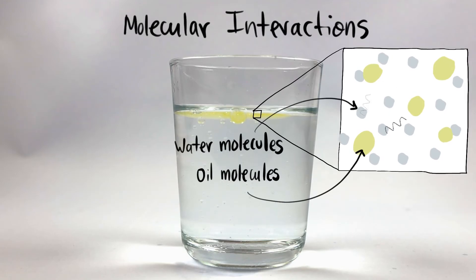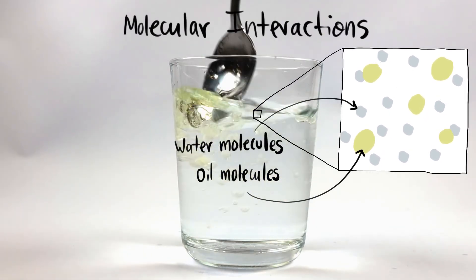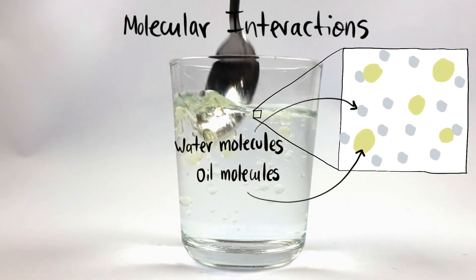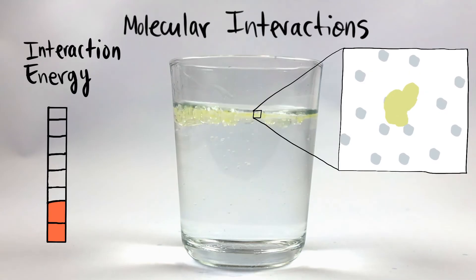Molecules interact with one another in many different ways. In some cases, like oil and water, molecules attract each other. As molecules come closer to one another, the energy due to interaction, or interaction energy, decreases. If the interaction is strong enough, they condense and form droplets.